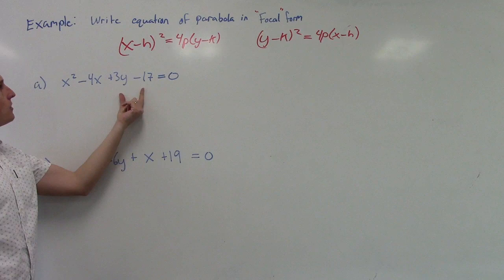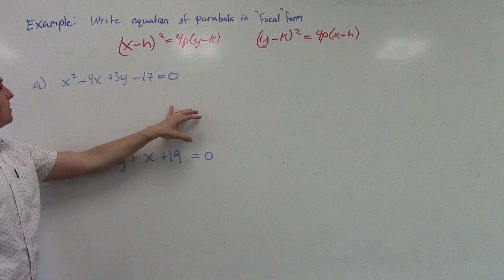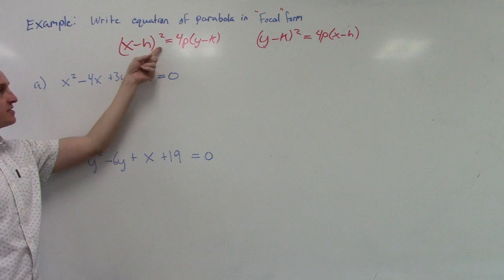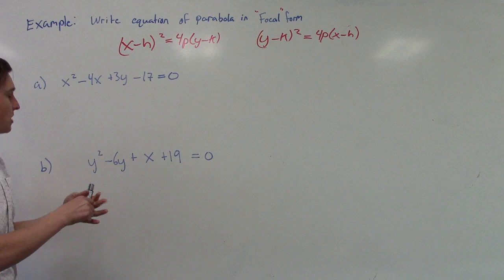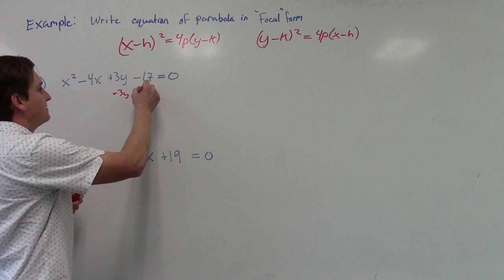So we've got an x squared, a minus 4x, a 3y, and a minus 17. What we want is the x stuff on the left-hand side, and we don't want the y stuff over on the other side. We're going to use the x-squared template because notice x is the one that's squared — there's no y squared, just an x squared. So we're going to start by getting everything that doesn't have an x off to the other side — subtract 3y and add 17 to both sides.